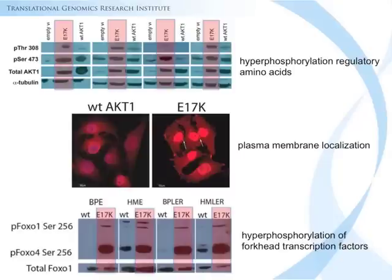Like the previous report, we did confirm that E17K was constitutively active in the human mammary epithelial cells as well. This was shown by virtue of hyperphosphorylation of the regulatory amino acids, plasma membrane localization, and hyperphosphorylation of FOXO transcription factors. We also demonstrated that in spite of constitutive activity, E17K was responsive to the PI3 kinase inhibitor LY294002, suggesting there is still a dependence on PI3 kinase.